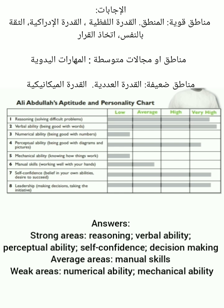Answers. Strong areas: Reasoning, Verbal ability, Perceptual ability, Self-confidence, and Decision-making. Average areas: Manual skills. Weak areas: Numerical ability and Mechanical ability.